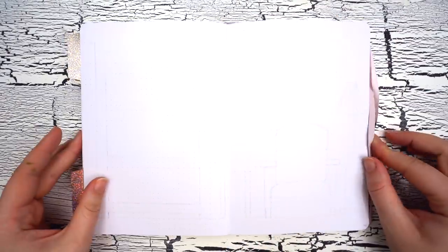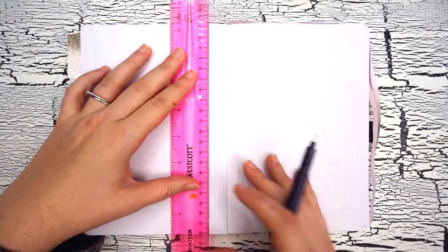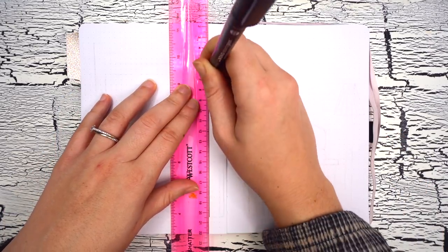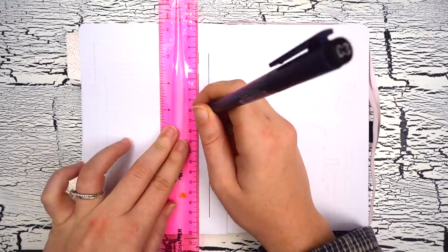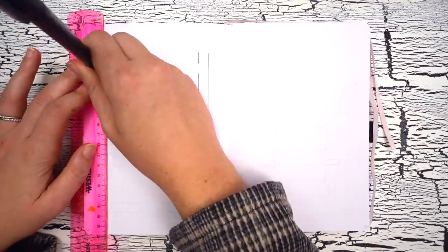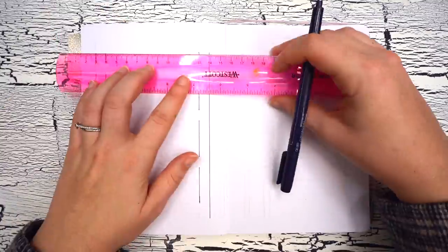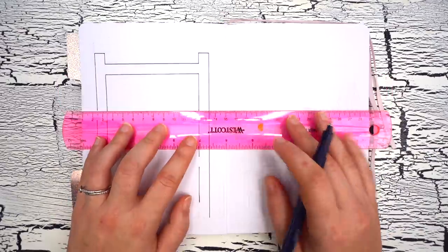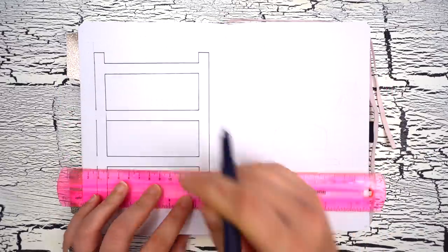Without further ado, let's get into my December bullet journal setup. As usual with my monthly setups, I'm starting December off with a decorative cover spread as a fun way to introduce the new month in my journal. This is also going to be my last month in this journal since I'll be starting a brand new one in January for the new year, so I'm really excited to finish this year off strong with this setup.